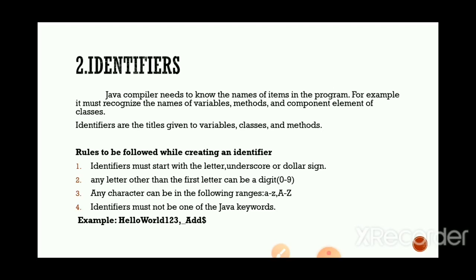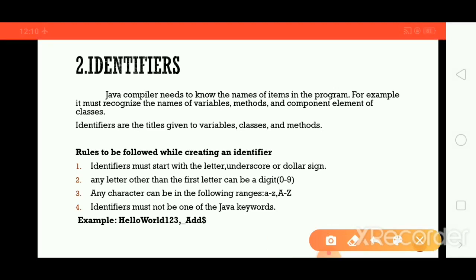For example, names of variables, methods, and component elements of classes. Now, rules to be followed while creating an identifier — this is very important. If you want to create an identifier you need to follow some rules. The first rule: identifiers must start with a letter, underscore, or dollar sign. Your identifier should start with one of those.